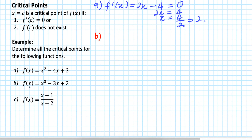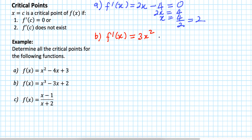Now we need to find the critical point for this function. First, what we need to do is to find the derivative. f'(x): the derivative of x cubed is equal to 3x squared. The derivative of minus 3x is equal to minus 3. The derivative of 2 is equal to 0.